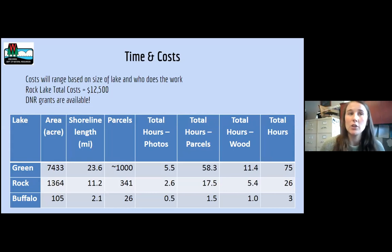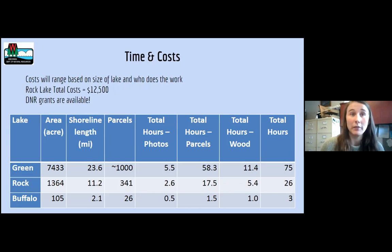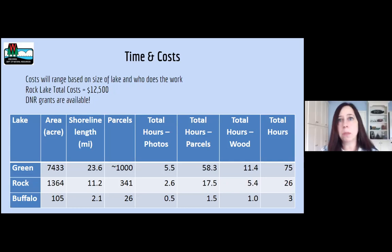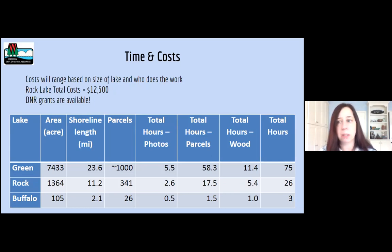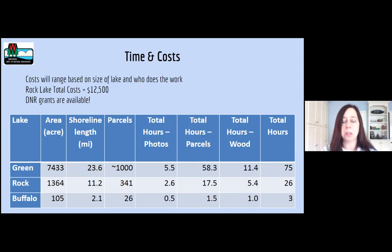The time it takes to complete a shoreland and shallow survey depends on the size of your lake. Green Lake took 75 hours with 23.6 miles of shoreline. For Lake Ripley, we were on the water completing the parcel field work for roughly 15 hours over two days; the wood loop took about two and a half hours on a different day. The total cost of the Rock Lake shoreline and shallow survey was about $12,500. The vast majority of costs were for staff time to perform the survey, data entry, data management, and writing a report. Jefferson County donated about $9,500 worth of time, and a DNR grant covered the remaining $3,000.